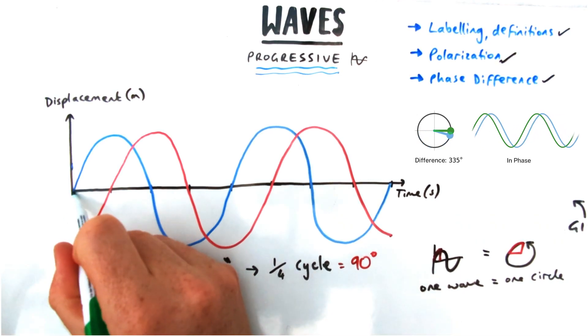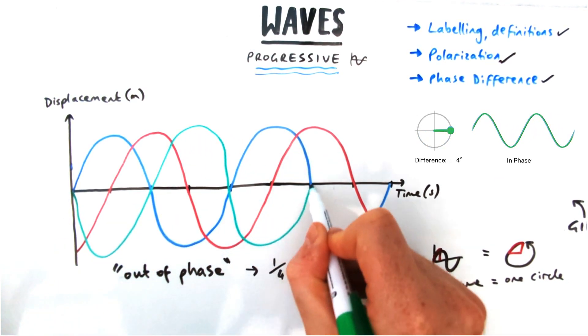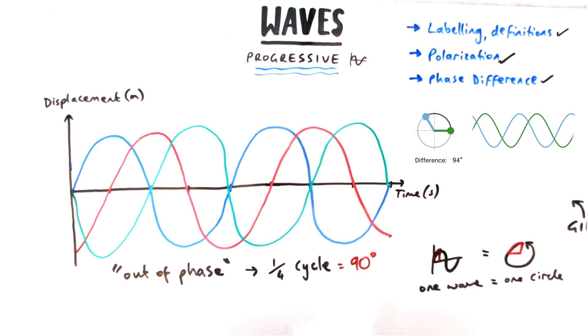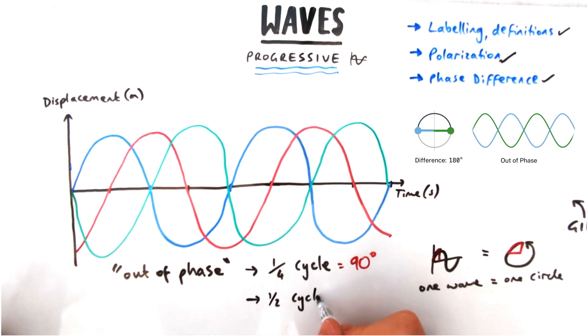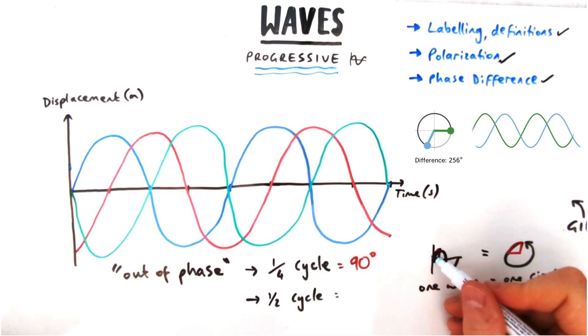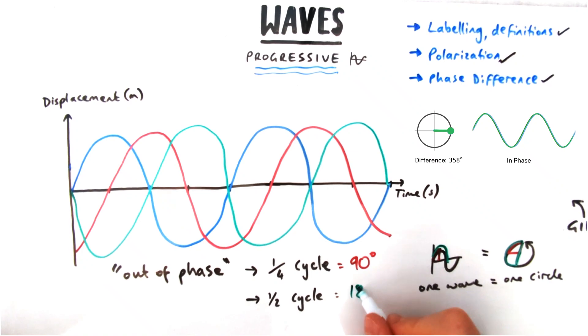If I was to draw another wave on, this wave compared to the blue one is going to be half a cycle out. It's exactly opposite and it's 180 degrees out of phase with my original wave, which is half a circle because that's half a wave.